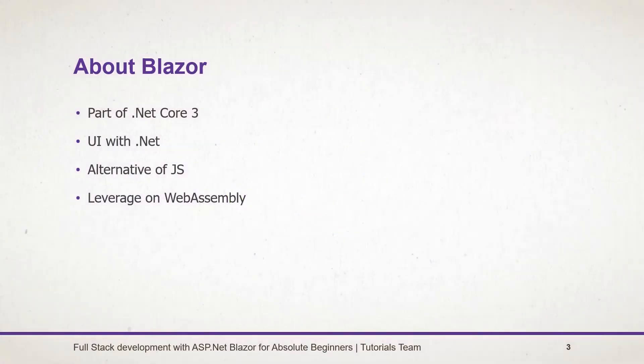I am going to teach you how to use Blazor for creating a single page application with C# throughout this series. The very first question arises: what is Blazor? Blazor is a framework under ASP.NET Core. It is released with .NET Core 3. Till now we were using JavaScript frameworks for creating user interfaces for applications. With Blazor, now we can create a user interface with C# too.